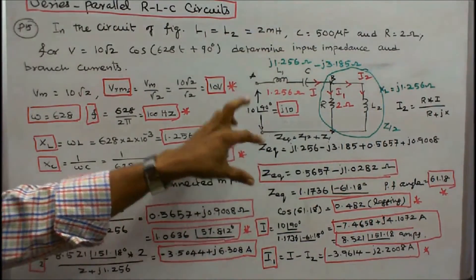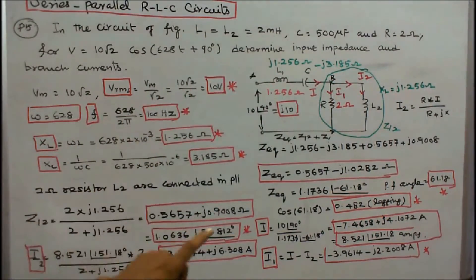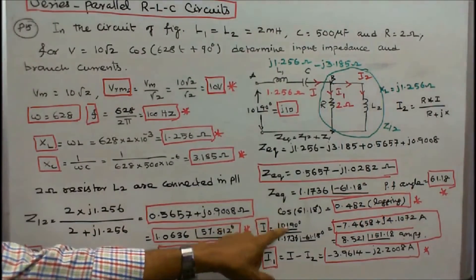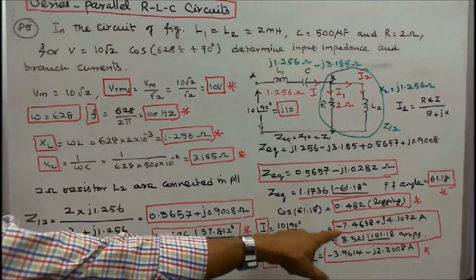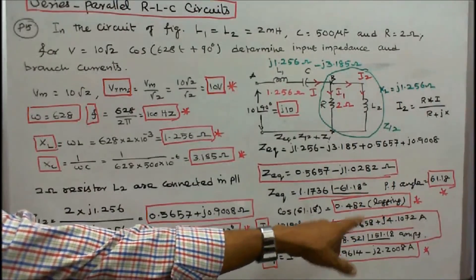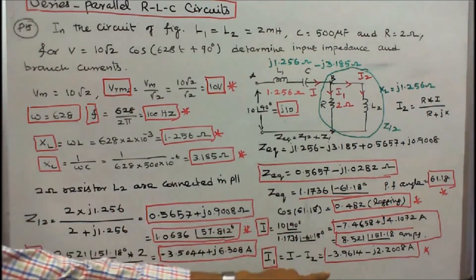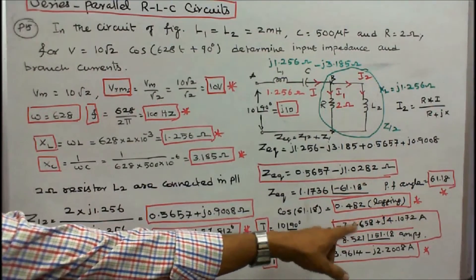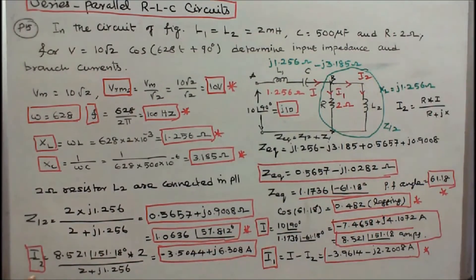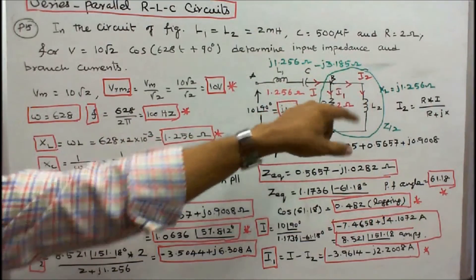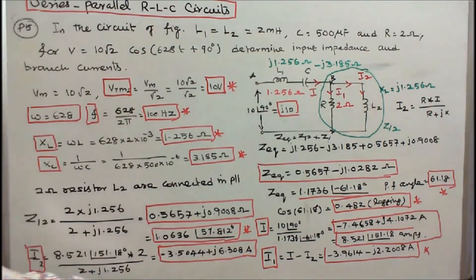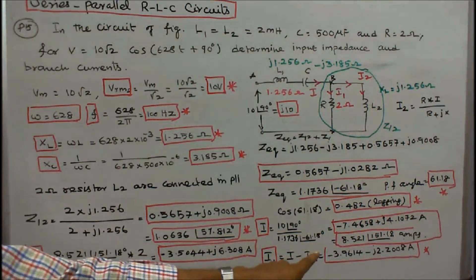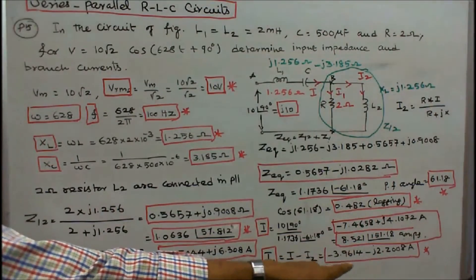I know the equivalent (total) impedance and the applied voltage, so I = V / Z_eq = 10∠90° / 1.1736∠−61.18° = −7.4658 + j4.1072 amps in rectangular form, or 8.521∠151.18° in polar form. Branch current I2 = R·I / (R + jXL) = −3.5044 + j6.308 amps. I1 = total current − I2 = −3.9614 − j2.2008 amps.